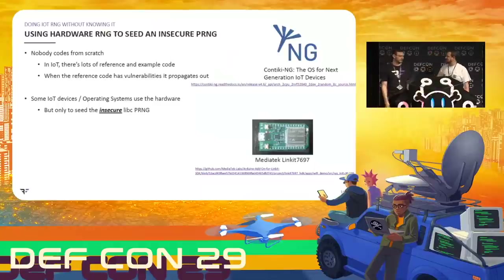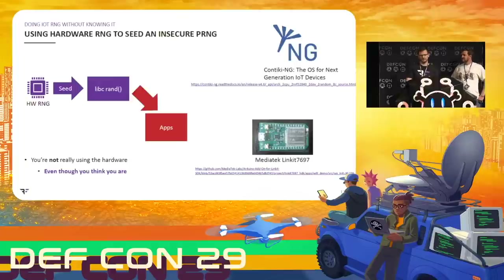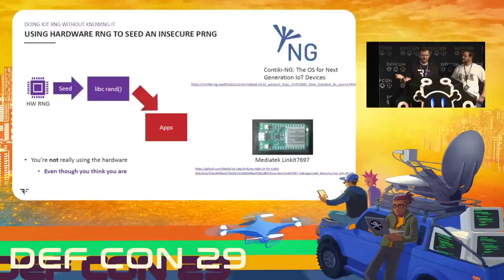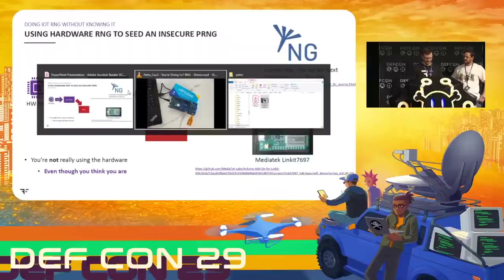The way some libraries work — such as Contiki-NG, specifically using the Nordic NRF52840 SoC as well as the Linkit 7697 Arduino code — when you call the HAL function, you might think you're getting a number from the hardware RNG. That's not actually how it works. All it does is take the hardware RNG, generate a seed, and then use libc random from there forward. So you're actually not even using the hardware RNG — you're just using libc random. That is as broken as it sounds, and for that we have a demo video.